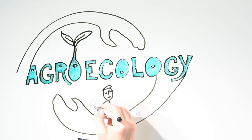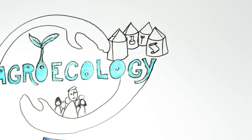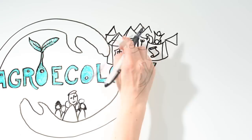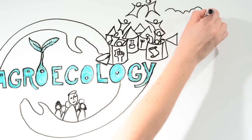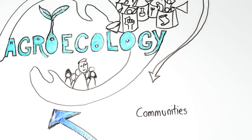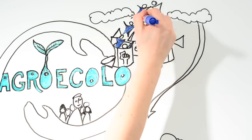Agroecology is being used by many practitioners in farming and food to escape from the silos that normally restrict us. Farming, science and social movements, production, distribution and consumption, the policy makers and we the people can all come together in agroecological communities of practice.